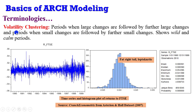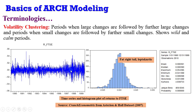Having understood volatility, what is volatility clustering? It refers to periods when large changes are followed by further large changes, and periods when small changes are followed by further small changes. Its evidence is wild and calm periods. Using the returns on the FTSE series, you can see evidence of volatility clustering here — large changes followed by further large changes. Then you can see some calmness — small changes followed by further small changes. At this point, you can see a clustering here: large changes followed by further large changes.